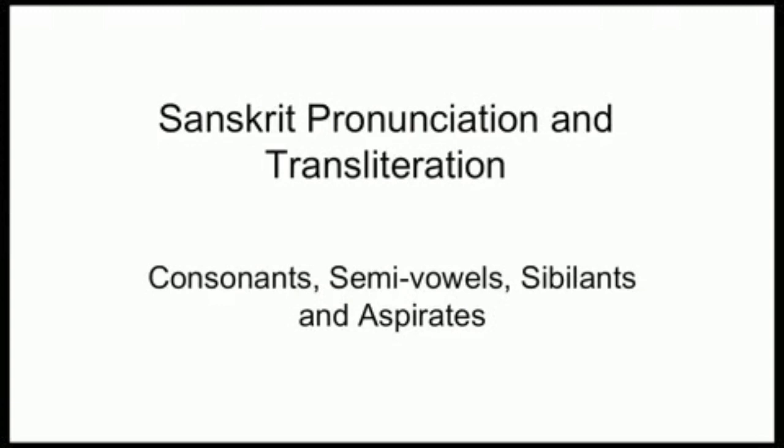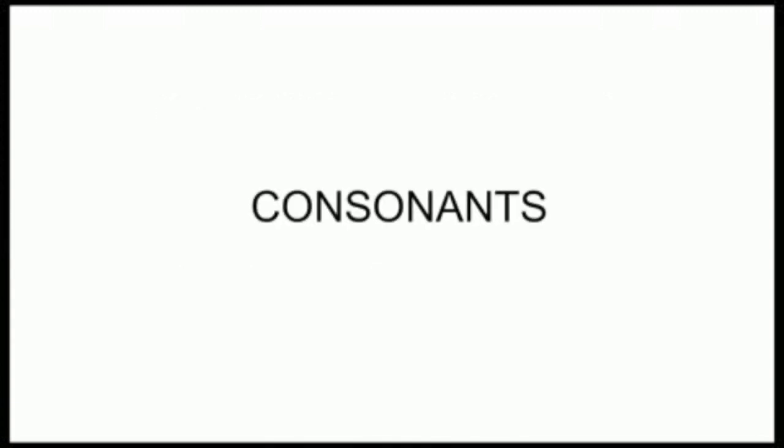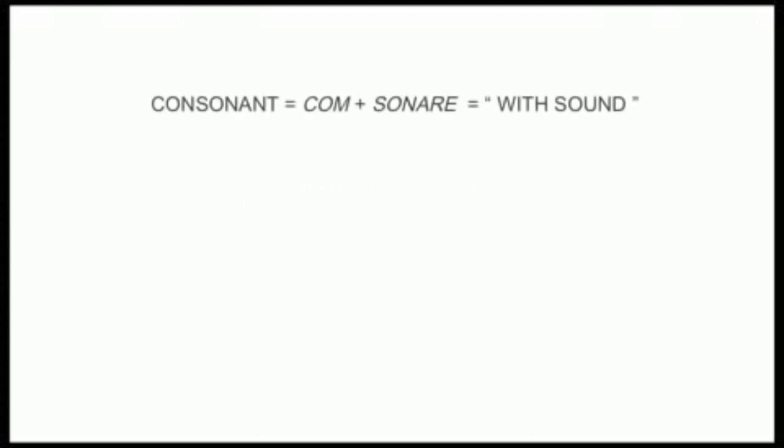Welcome to our short lesson on Sanskrit consonants and other letters. We'll be explaining the pronunciation along with their transliteration symbols. Let's begin with the consonants. The word consonant comes from two Latin root words which literally translate to with sound. A consonant can only be sounded explicitly when it is given a sound by the use of a vowel. If there is no vowel to modify it, the sound of the consonant remains unmanifest.